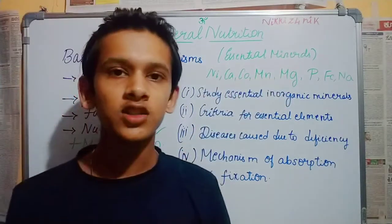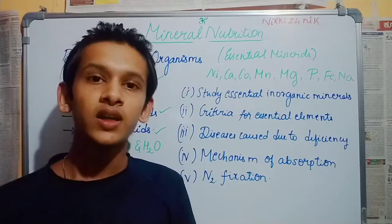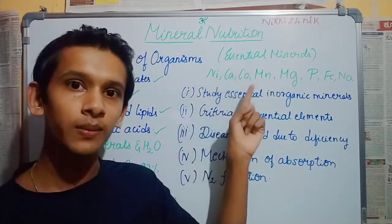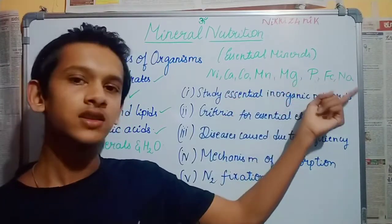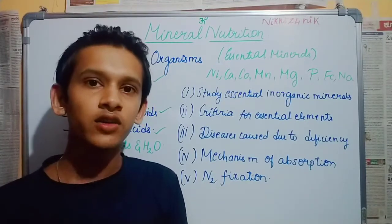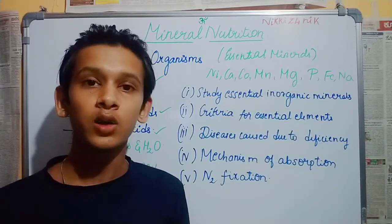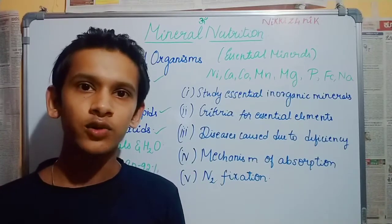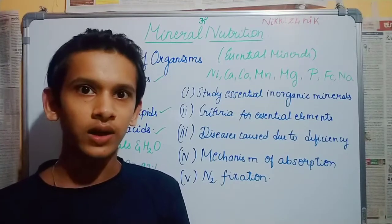Coming to Essential Minerals. In this chapter, we have Essential Minerals and Non-Essential Minerals. Essential minerals generally include nickel, calcium, cobalt, manganese, magnesium, phosphorus, iron, sodium, and potassium. These ions or minerals are required by us. For example, iodine — because iodine is required for thyroid hormone synthesis. The thyroid hormones are T3 and T4 types, and iodine is a required substance for them.